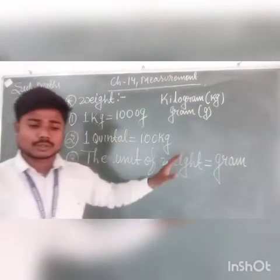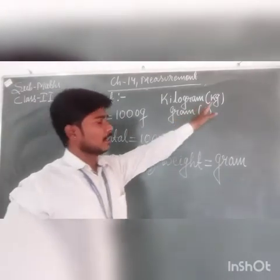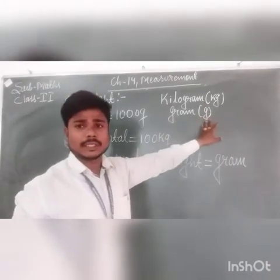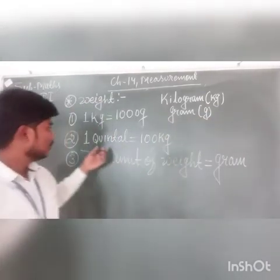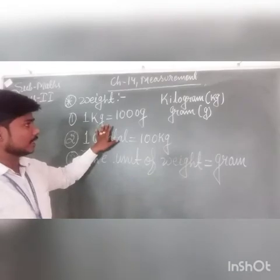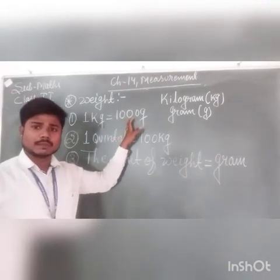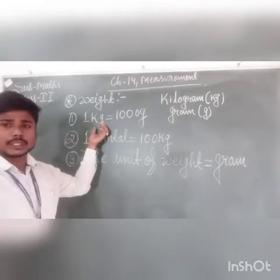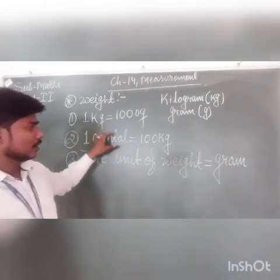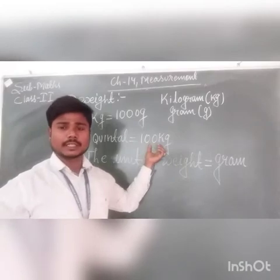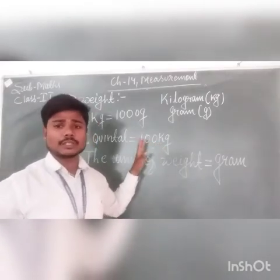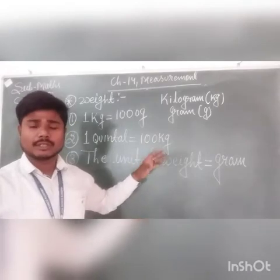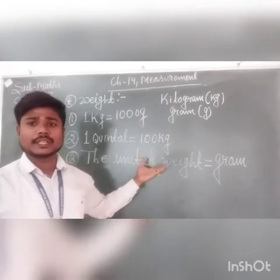The short form of kilogram is kg, and the short form of gram is g. Keep in mind: 1 kg has how many grams? 1000 grams. So 1000 grams makes 1 kg. Now, 1 quintal is equal to 100 kg. This unit is also used to measure the weight of things or quantity of anything. So kg, gram, and quintal are the units used to measure weight.